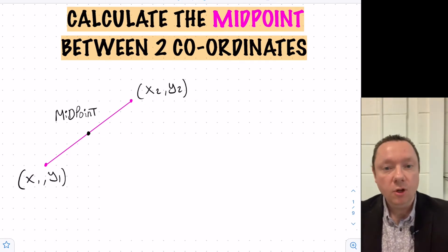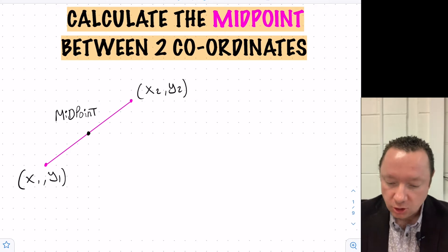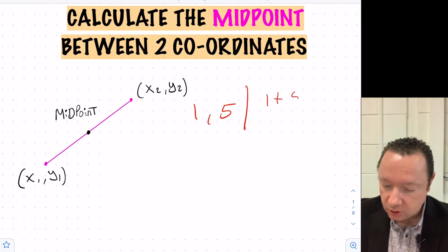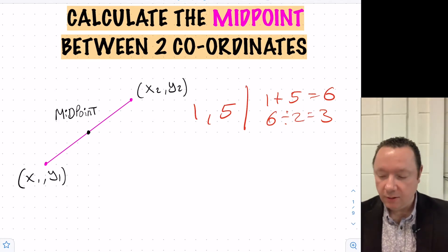To find the middle of two numbers, there's a couple of ways you could do it, but the simplest way is just to average them out. So if I had the middle of one and five, I could just do one plus five, which is six, and then divide by two, which is three. And three is clearly the middle of one and five. So I can just average out the x's and average out the y's.